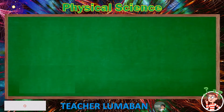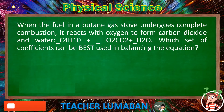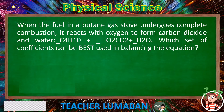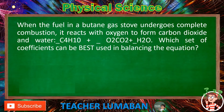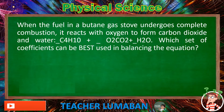When the fuel in a butane gas stove undergoes complete combustion, it reacts with oxygen to form carbon dioxide and water: __ C₄H₁₀ + __ O₂ → CO₂ + __ H₂O. Which set of coefficients can best be used in balancing the equation?